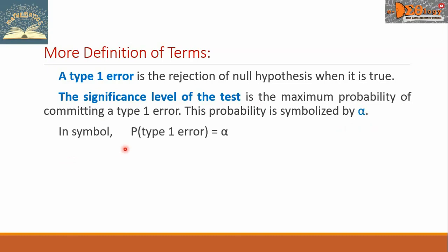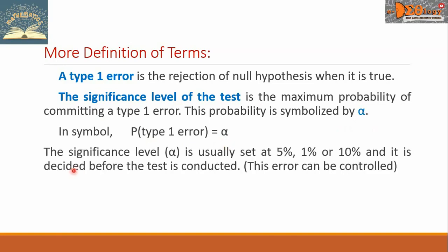In symbol, P of type 1 error equals alpha. The significance level alpha is usually set at 5%, 1%, or 10%, and it is decided before the test is conducted. We say that this error can be controlled.